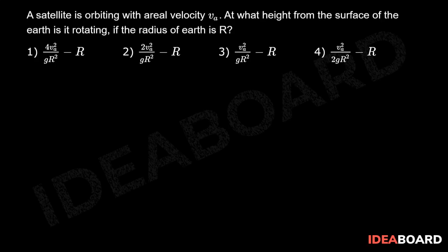So actually we know aerial velocity Va is equal to area by time, which is equal to pi times r plus h whole square by time. Time is nothing but T which is equal to S by V.